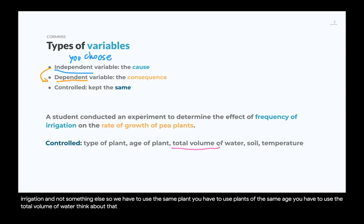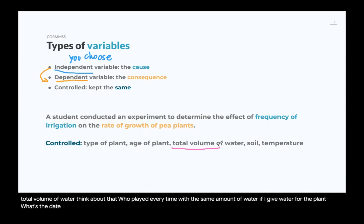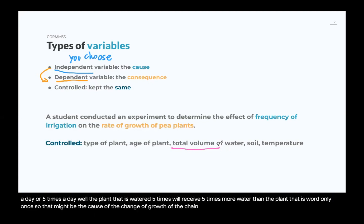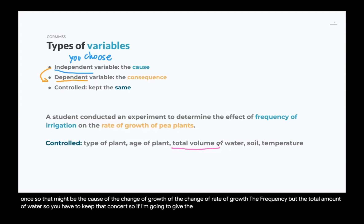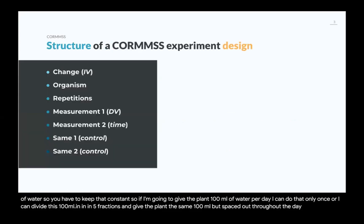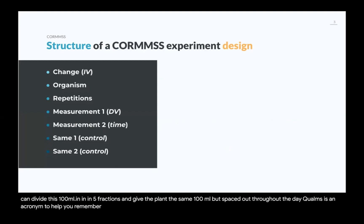Think about this: if I water the plant with the same amount each time — say once a day or five times a day — the plant watered five times will receive five times more water than the plant watered once. That might be the cause of the change in growth rate, not the frequency but the total amount of water. So you have to keep that constant. If you're giving the plant 100 milliliters per day, you can do that in one go or divide it into five fractions spaced throughout the day.